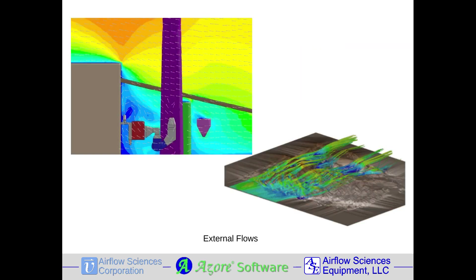Computer simulations of external flow fields help determine localized effects of the wind. High winds cause particles from operations or tailings to be dispersed in unwanted areas. Some external flow modeling may include areas of many square miles, as illustrated in the image to the right. The force of the wind may cause structural damage in and around buildings or equipment, as shown in the model on the left.